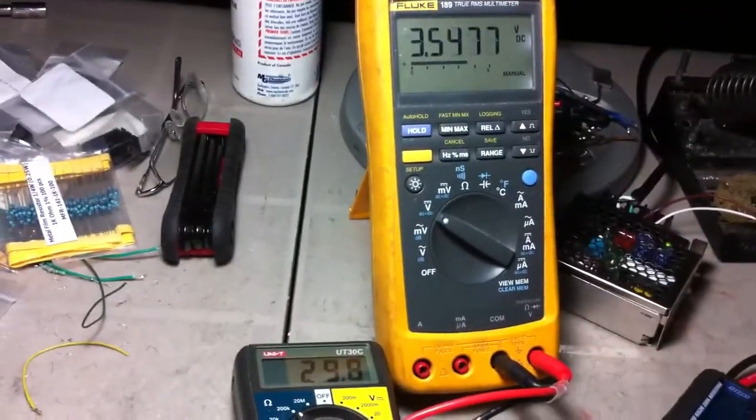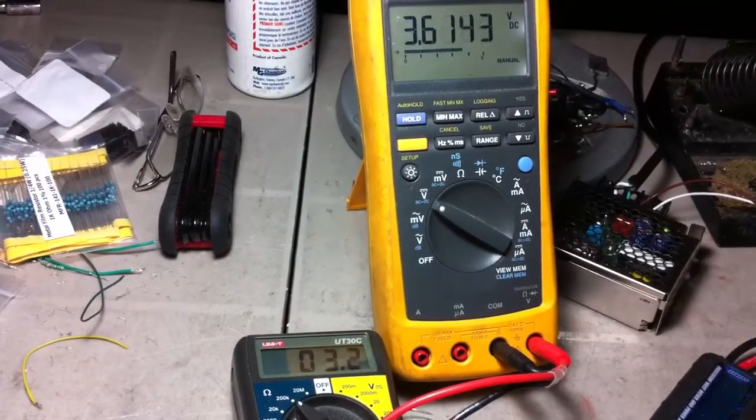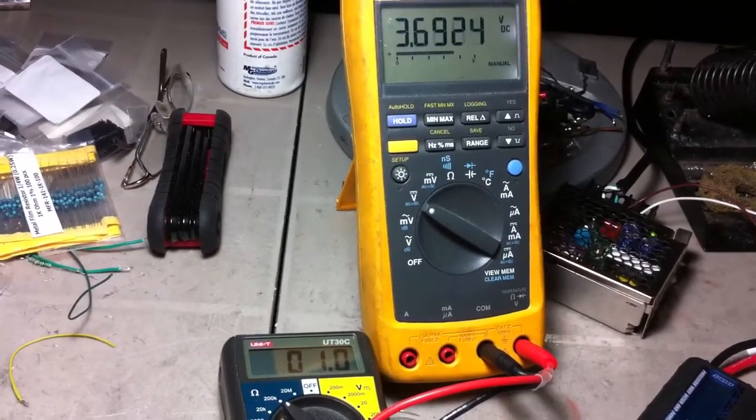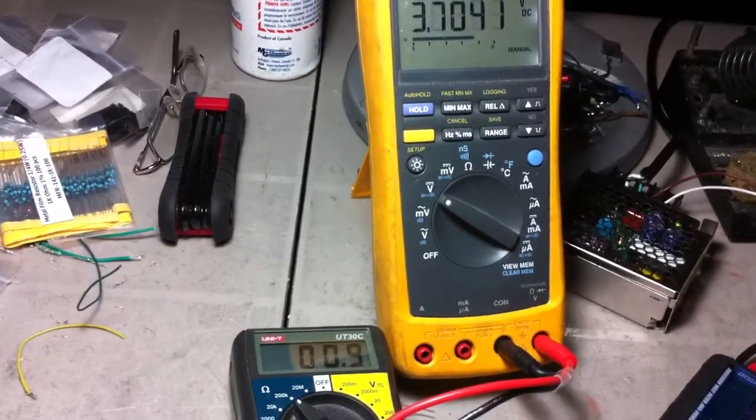So you'll see the bottom resistance starting to go down. I wish I had two Fluke multimeters, but unfortunately I only have one.